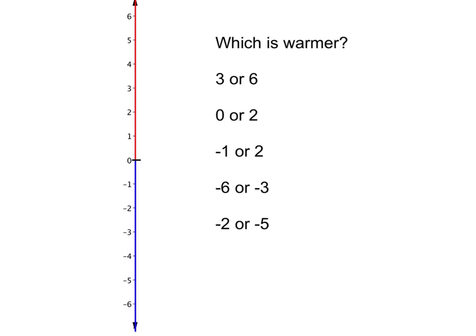We're going to work with a simplified thermometer that just goes from 6 degrees Celsius to negative 6 degrees Celsius. All of these are actually quite coldish temperatures, but what we do know is that as we go up our temperatures get warmer, and as we go down our temperatures get colder and colder until they go even below zero, below freezing. So going up we get warmer and going down we get colder.